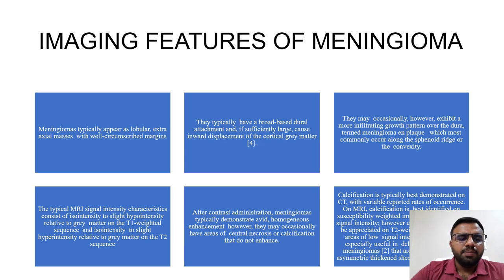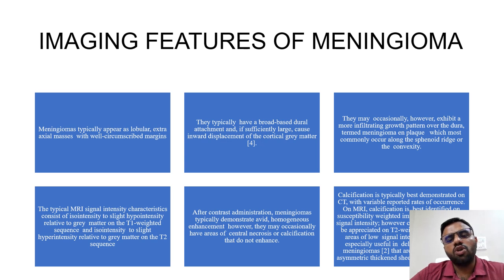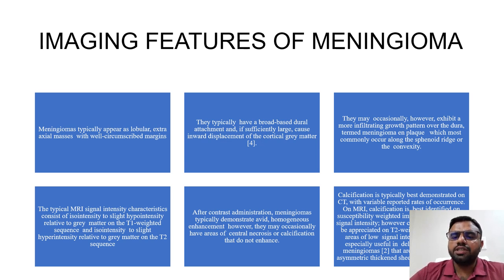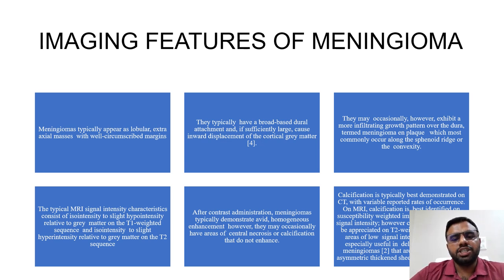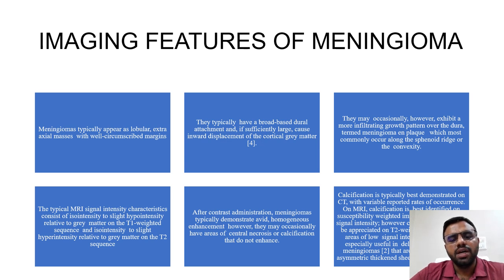Imaging features of meningioma: meningiomas typically appear as a lobular extra-axial mass with well-differentiated margins. They typically have a broad-based dural attachment and, if sufficiently large, cause an inward displacement of cortical gray matter. They may occasionally exhibit a more infiltrating growth pattern over the dura, commonly occurring along the sphenoid ridge or the convexity. Typical MRI signal intensity consists of iso- to slight hypo-intensity on T1 and iso- to slight hyper-intensity on T2 sequences. After contrast administration, meningiomas typically demonstrate avid homogeneous enhancement, though they may have areas of central necrosis or calcification that do not enhance.